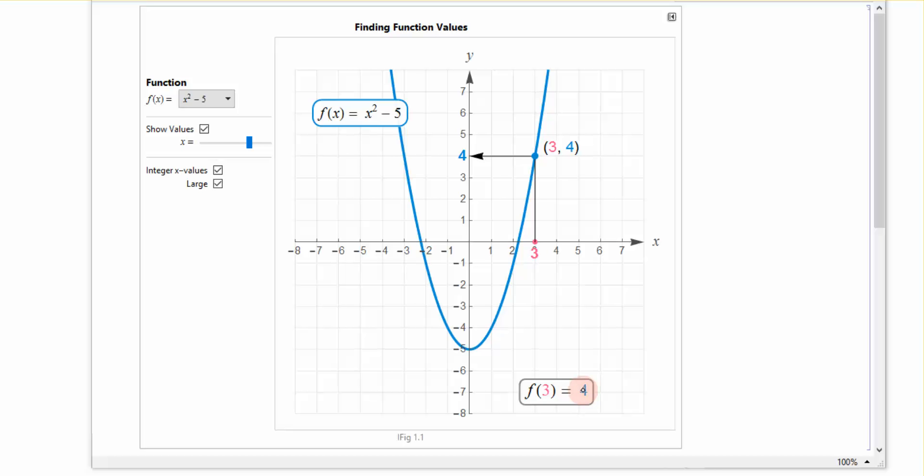that gives me 4 for a y value. So if I come over here and I put 3 squared, which would be 9, minus 5, I get 4.